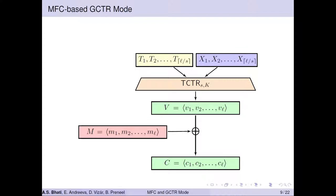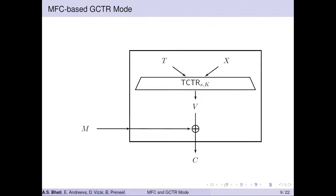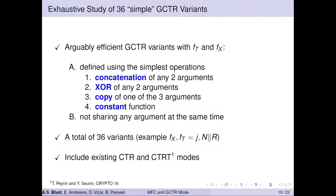Going back to the main GCTR mode, it takes tweak sequence T and input sequence X, gives key stream V, XORed with message M to give ciphertext C. If a nonce is used, it goes with the input; if internal randomness R is used to randomize the ciphertext, that randomness is also required as output. The functions Ft and Fx — the tweak function and input function — are in simple cases generated using inputs like nonce N, internal randomness R, or some counter J.